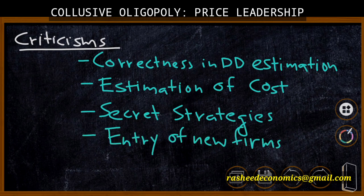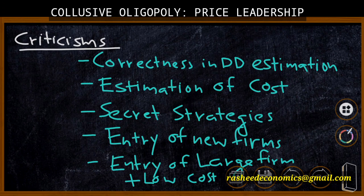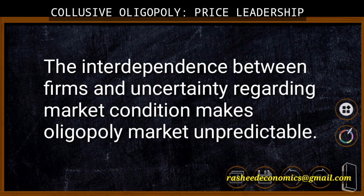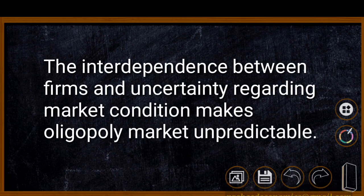Another criticism is that the assumption that entry of new firms is restricted may not always be true. If a new firm enters the industry with large productive capacity and low cost, the picture will change. A famous example is the mobile phone service provider market: there was a strong oligopoly, but the entry of a large firm like Jio changed the picture considerably. In these circumstances we can conclude that interdependence between firms and uncertainty regarding market conditions makes oligopoly market conditions unpredictable.